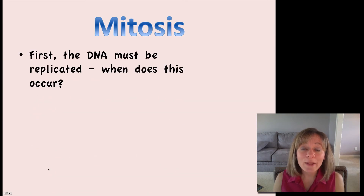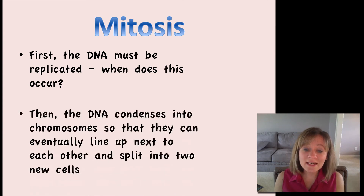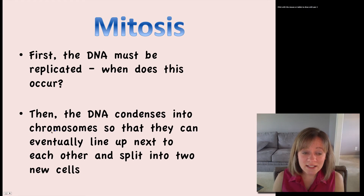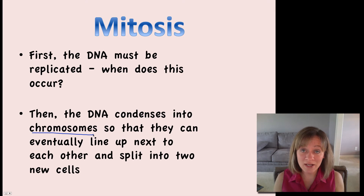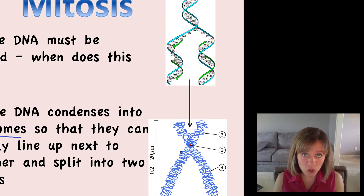Let's take a look at the mitotic phase. Before the DNA can be divided, it has to be duplicated in the S phase of interphase. Then the DNA is going to condense into chromosomes. Inside the nucleus we have chromatin, which is this loose ball of DNA — very messy. This DNA has to condense into nice chromosome structures so they can eventually line up next to each other and then separate into the new cell and the old cell.